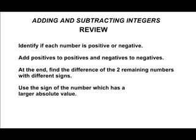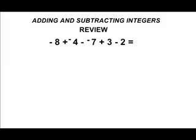Let's use one more example so we can apply the rules that we just learned. In this example, we're going to identify all the positives first. The first positive that we see is the number 7, and we know this because we see minus a negative directly in front of the 7. And the number 3 is positive as well because we see a single plus sign in front of that. So we're going to add positive 3 and positive 7 together, which gives us positive 10.